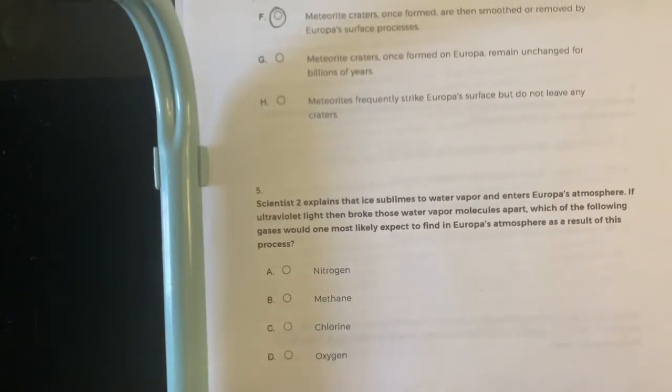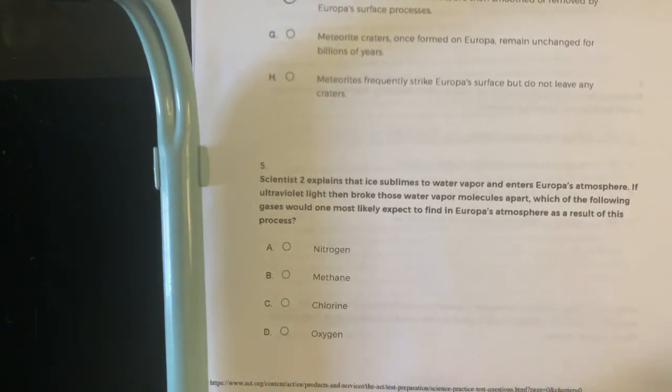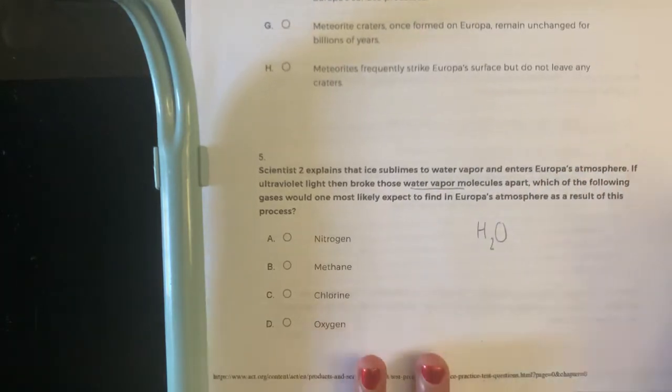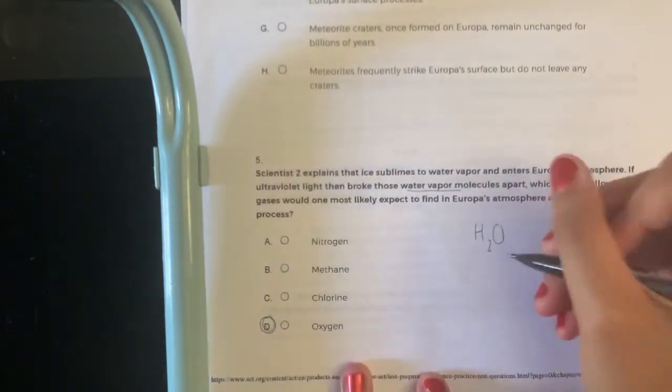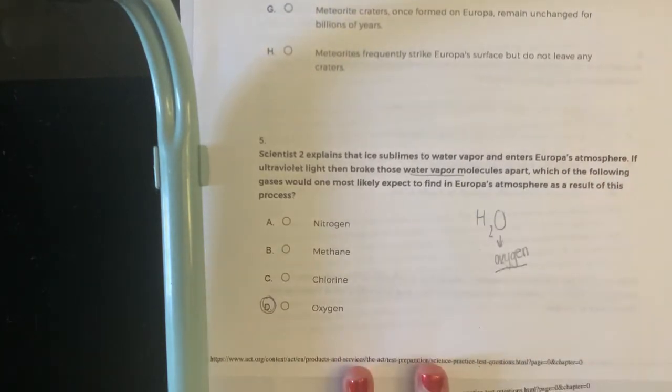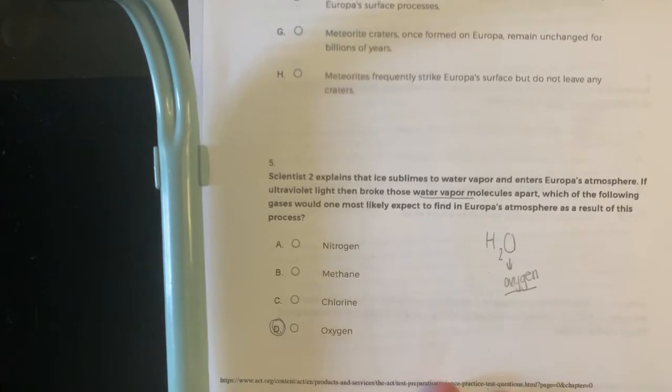Scientist 2 explains that ice sublimes to water vapor and enters Europa's atmosphere. If ultraviolet light then broke those water molecules apart, which of the following gases would you most expect to find in Europa's atmosphere? So this I think is just like a basic science knowledge question. Water vapor is just water, so it's going to be H2O. So you'd expect to see oxygen molecules because it's oxygen. Again, these are some basic science things you should know. I have a whole video linked in my ACT tips video that you should watch to be familiar with this.